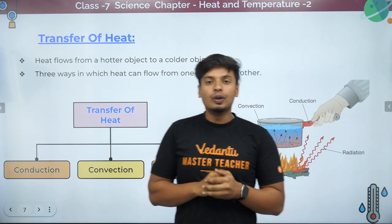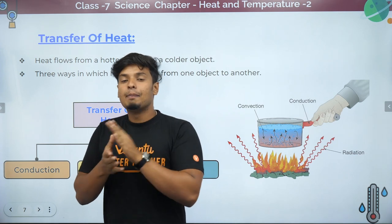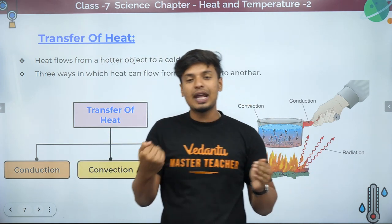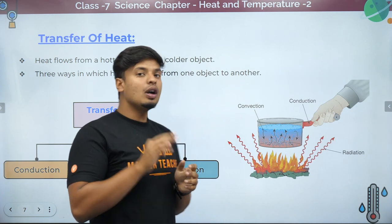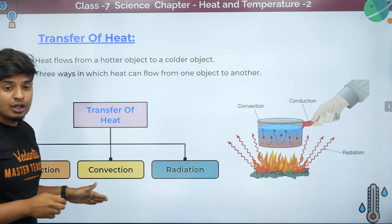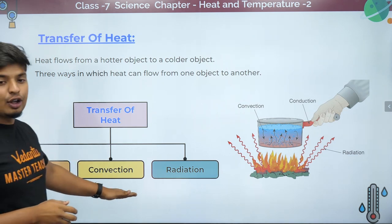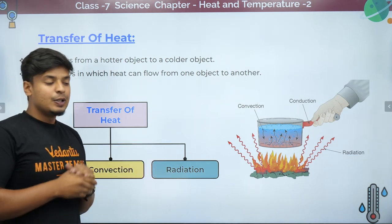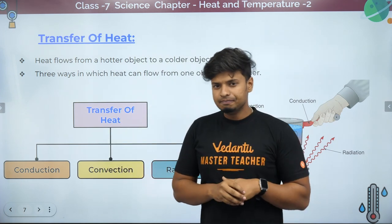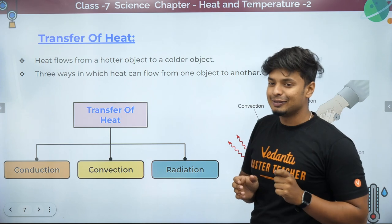There are three methods by which heat can transfer from one object to the next. One is conduction, the second is convection, and the third is radiation. Let's talk about all three separately.